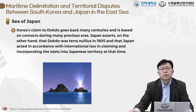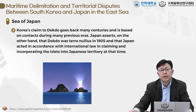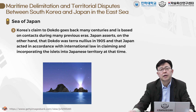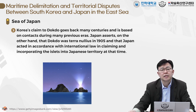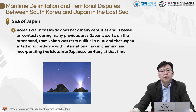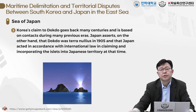Korea's claim to Dokdo goes back many centuries and is based on contact during many previous eras. Japan asserted, on the other hand, that Dokdo was terra nullius in 1905, and that Japan acted in accordance with international law in claiming and incorporating the islet into Japan's territory at that time. Korea viewed this initiative as part of Japan's aggressive and illegal expansionism, whereby Japan established a protectorate over Korea in 1905 and then formally annexed Korea in 1910.